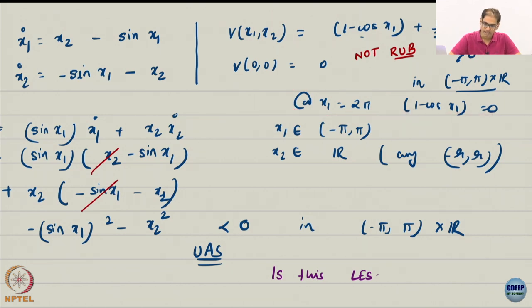So for all states of the form 2n pi, 0, this is 0. So this is not positive definite globally. Like Vidya Sagar likes to say, LPDF and PDF. This is not PDF, this is only LPDF. That is locally positive definite. Actually we have only defined locally positive definite. So now this is the case where we have to define a BR, a ball of radius R around the equilibrium.